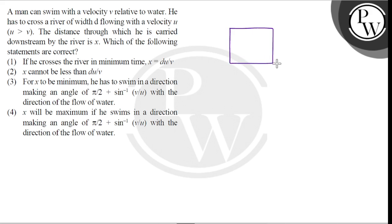So, suppose here is our river. The river has velocity U and the swimmer swims at angle theta. And this is the velocity V.